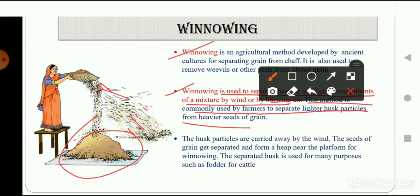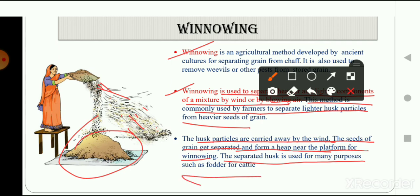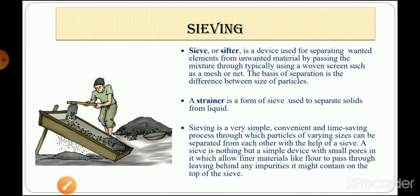This method is commonly used by farmers to separate light husk particles from the heavier seeds or grains. The husk particles are carried away by the wind while the heavier seeds fall and form a heap near the platform. The separated husk is then used for other purposes, such as food for cattle. The heavier grains land on the surface and the lighter particles get separated — this is winnowing.